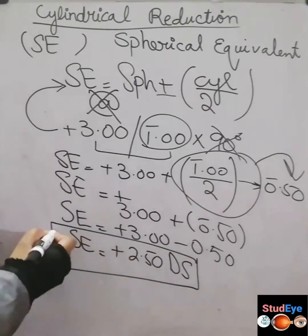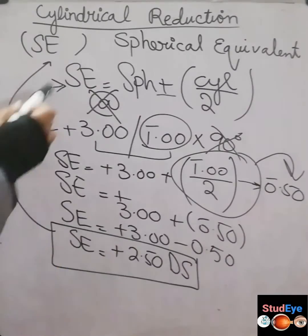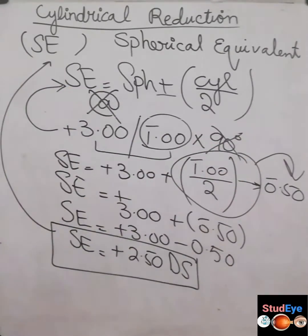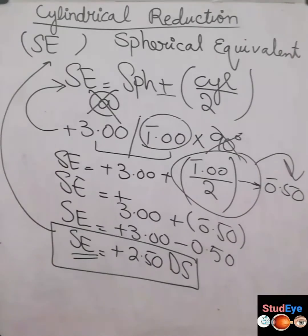This plus 2.50 DS is the spherical equivalent, or cylindrical reduction, of the above prescription. It is optically equivalent to the original prescription, but with no cylinder component. This is applicable in cases where the patient does not appreciate any cylindrical number, either plus or minus. In those cases, we can prescribe the spherical equivalent to the patient.